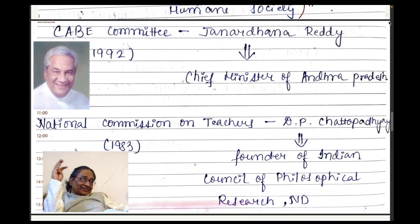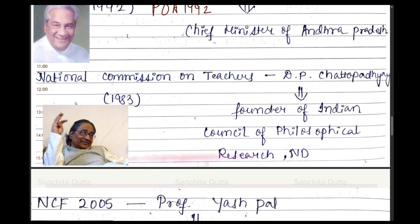Next is the CAPE Committee, also known as the Janardhan Reddy Committee. It is also known as the Program of Action (POA) and came in 1992. Janardhan Reddy was the Chief Minister of Andhra Pradesh.